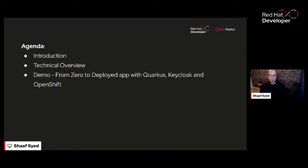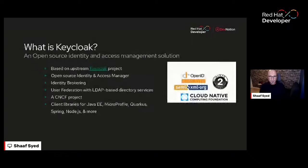We'll deploy everything to OpenShift and then jump into Q&A — throw as many questions as you want and Issa and I will answer as much as possible. So, what is Keycloak? Keycloak is an open source identity and access management solution based on the upstream Keycloak project. If you haven't been on GitHub, the upstream Keycloak project is there along with the keycloak.org website. Lots of people use it, whether in containers or zip files.